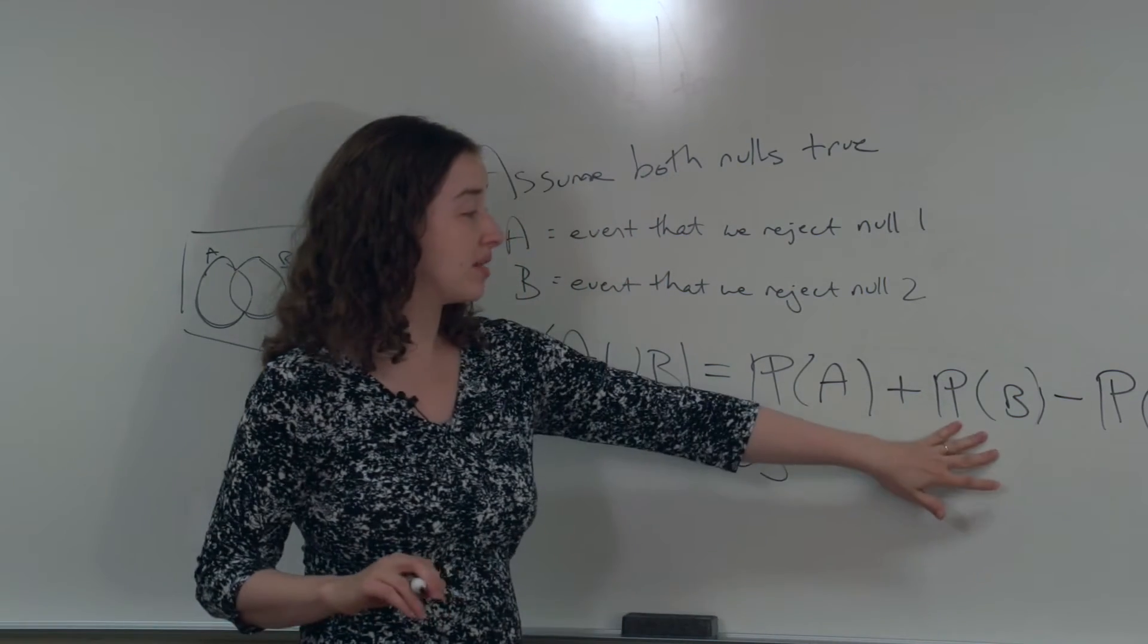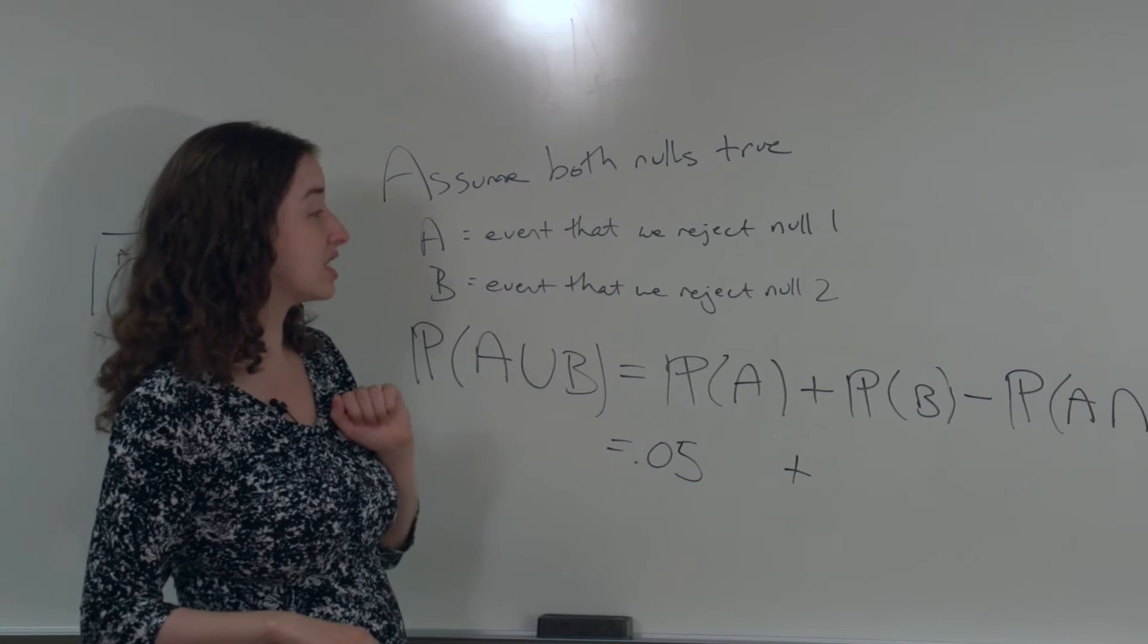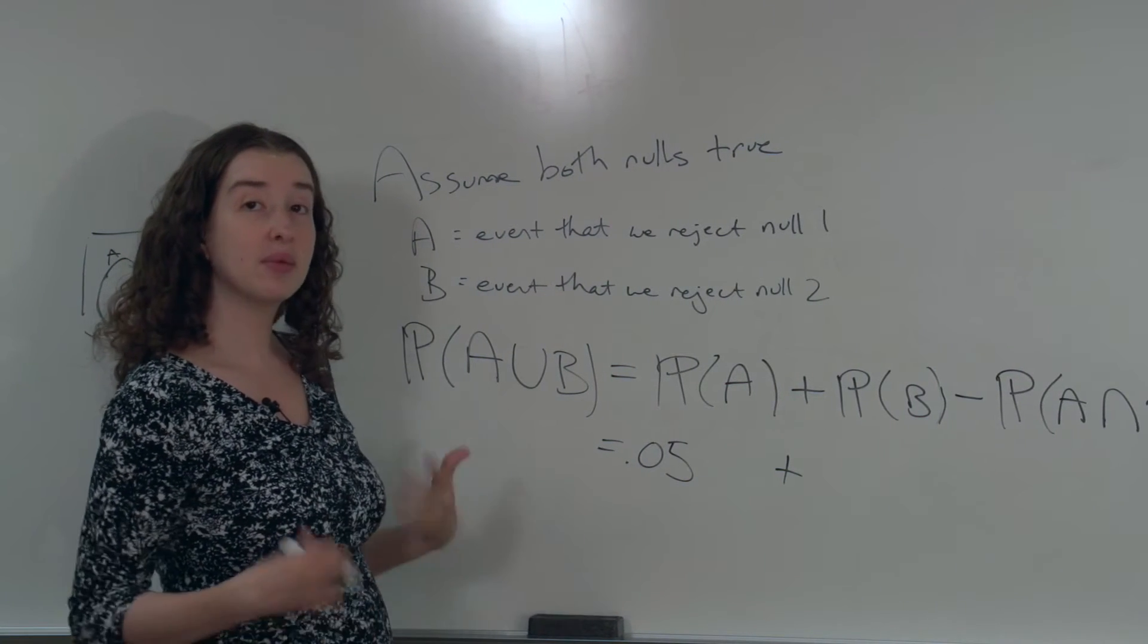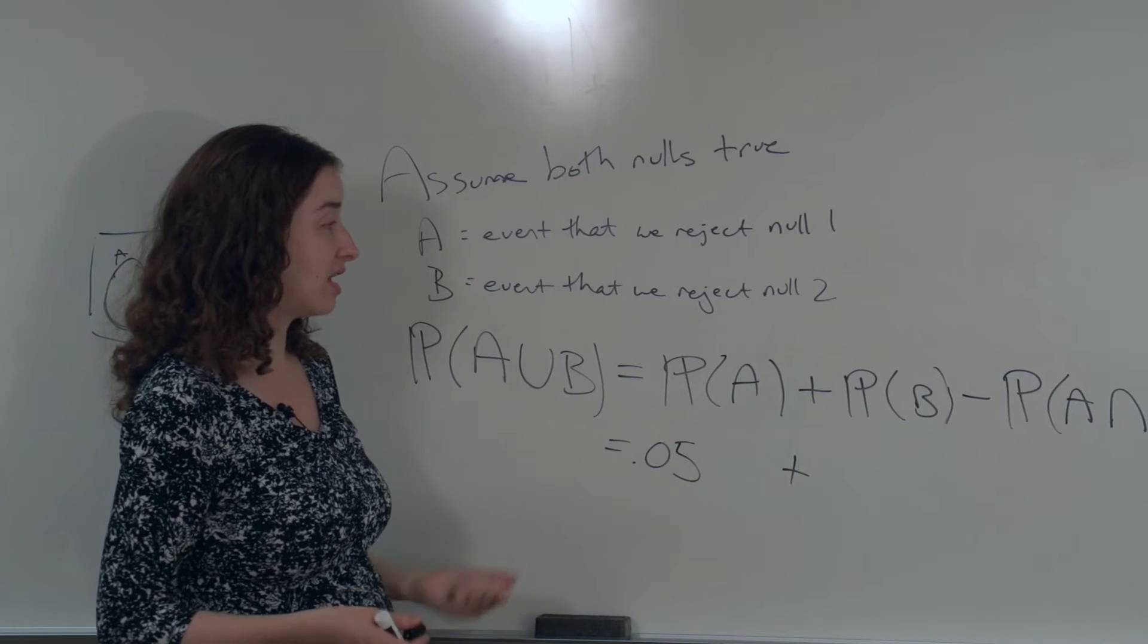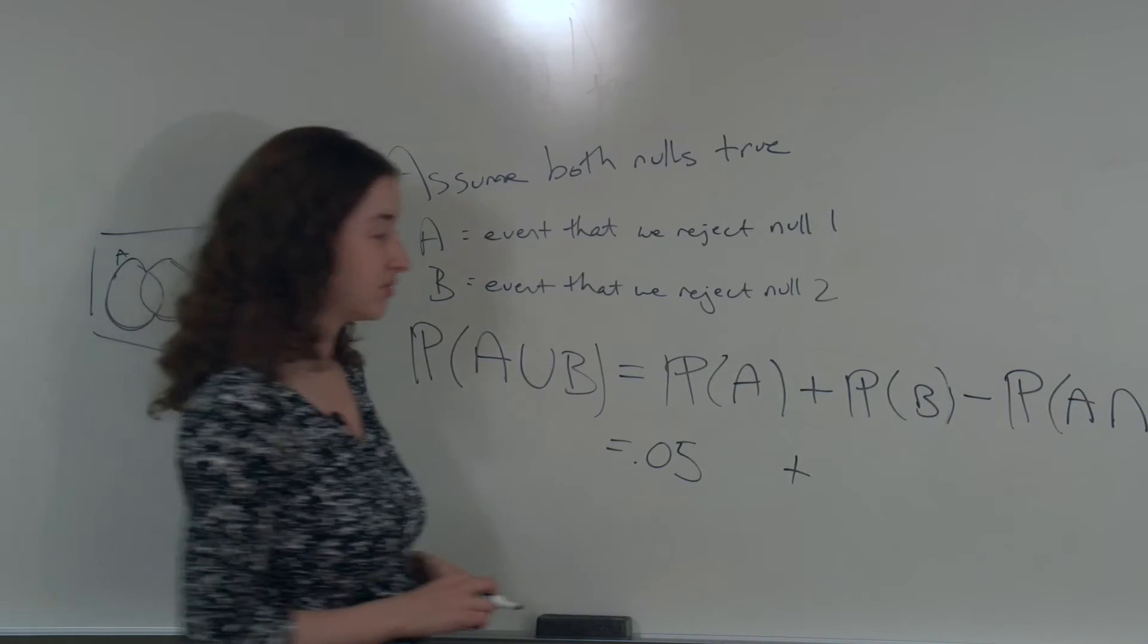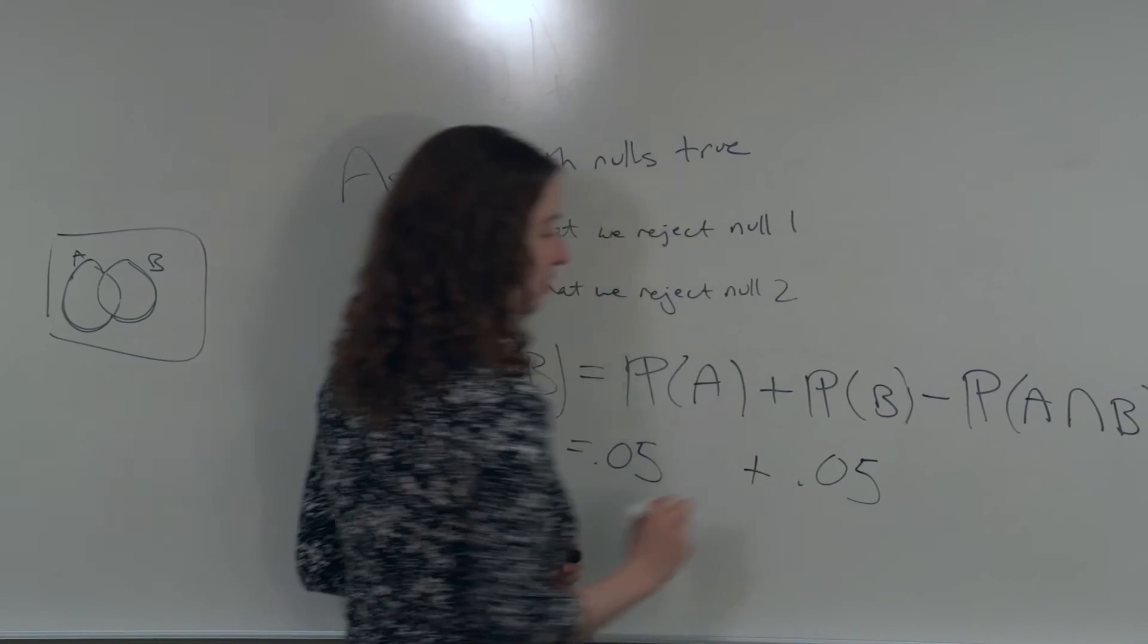What about for B? If the null is true for the second test, the probability that we reject that null is equal to whatever cutoff we use. For example, 0.05.